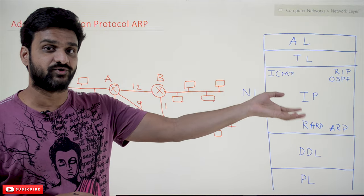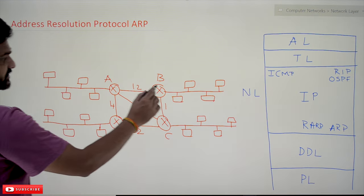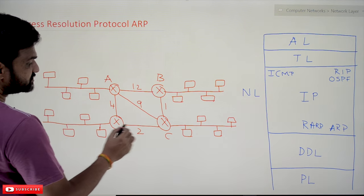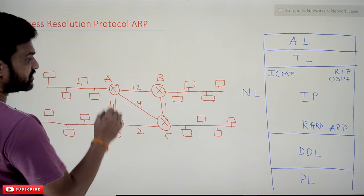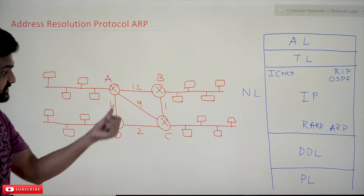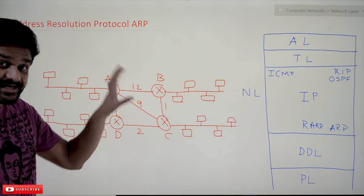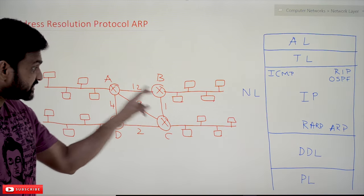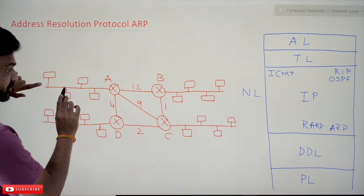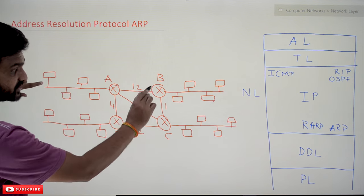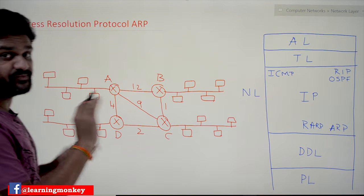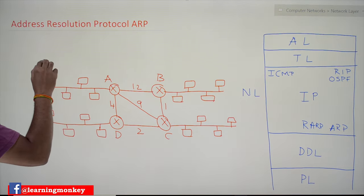We'll understand the use of ARP by using this example. In this internetwork — please understand the terminology — these are all routers which are interconnected. By using these routers we are going to communicate with different networks. This interconnection of routers is what we call the internet. With this interconnection of routers, we are going to communicate with systems in other networks — that is what we call internetworking.